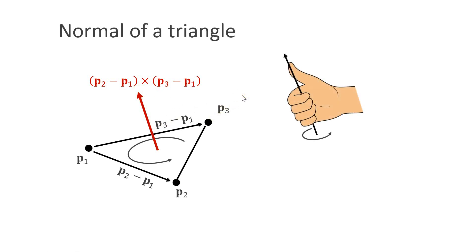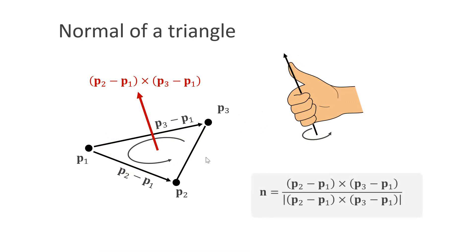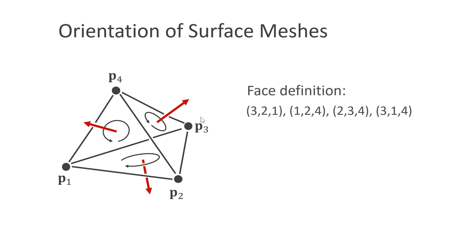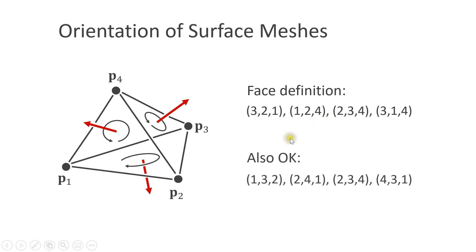Here I want to introduce a very important concept: the orientation of a triangle. If you curl the fingers of your right hand along p1, p2 and p3, then your thumb points into the direction of the normal of the triangle. Since the normal of the triangle is a unit vector, we have to normalize it. An oriented mesh is a mesh for which all triangle faces point outwards. To guarantee this, we have to define the faces in a certain way. For this tetrahedron, we have to define the bottom face as 3, 2, 1. If we define it as 1, 2, 3, the normal will point inwards, as you can verify with your right hand. This is another valid definition because it doesn't matter at which vertex we start — here we define the bottom face as 1, 3, 2, which also generates a normal that points out of the surface.